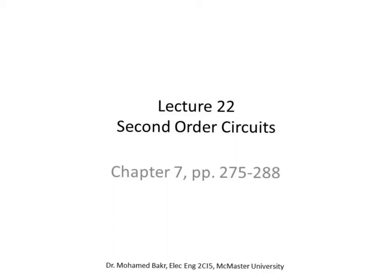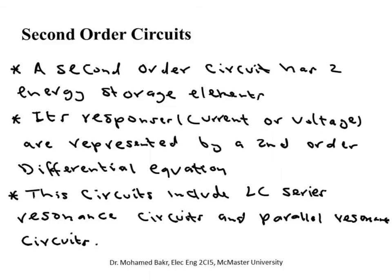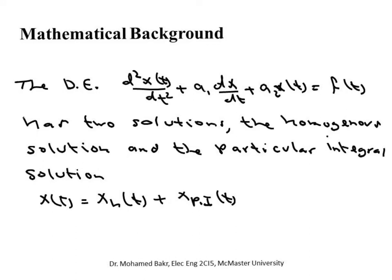The equation governing second order circuits is a second order differential equation. A second order circuit is a circuit that has two energy storage elements: two capacitors, two inductors, or one inductor and one capacitor. The current and voltage — such as the current through an inductor or the voltage across a capacitor — are governed by second order differential equations. These circuits include LC series resonance circuits and LC parallel resonance circuits, used widely in oscillators and filters.